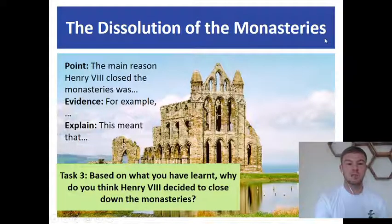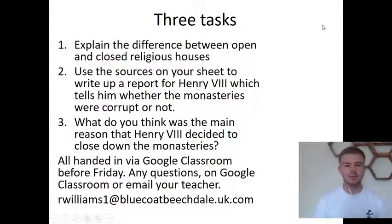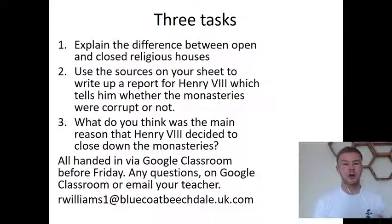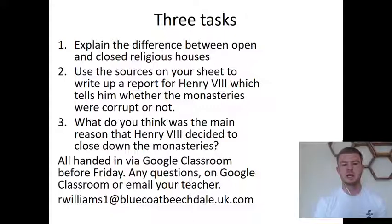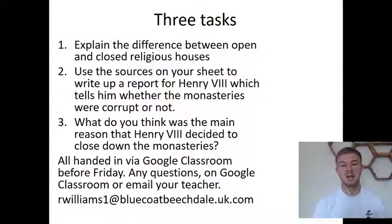That's your three tasks. Take your time and try to include the different sections of point, evidence, and explain. A reminder: task one — explain the difference between open and closed religious houses; task two — use the sources on your sheet to write up a report for Henry VIII on whether the monasteries were corrupt; task three — what do you think was the main reason Henry VIII decided to close down the monasteries? All of that work needs to be handed in via Google Classroom before Friday at 12pm midday.